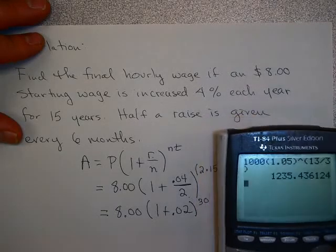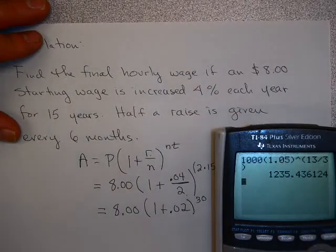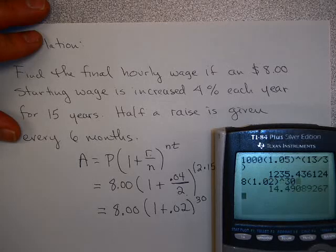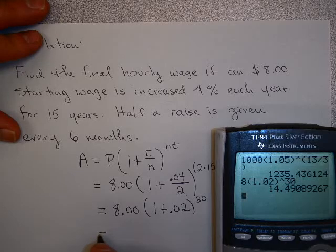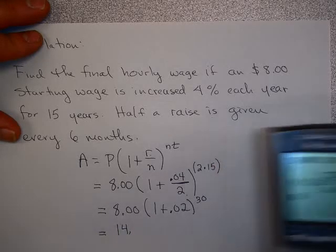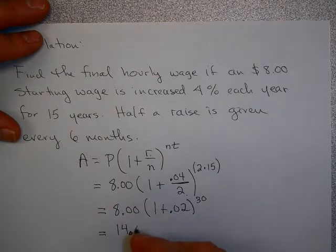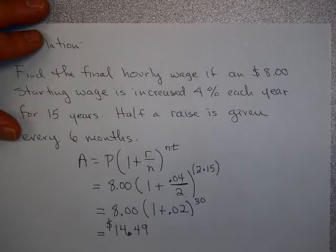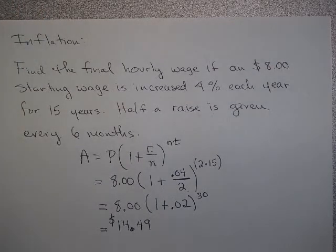And if I do that calculation on my calculator, I have 8 times 1.02 raised to the 30th. That would mean after 15 years, you would just be making about $14.50 an hour. Hopefully you would have found a better, more high-paying job by that point. But that gives you an idea of how that works.